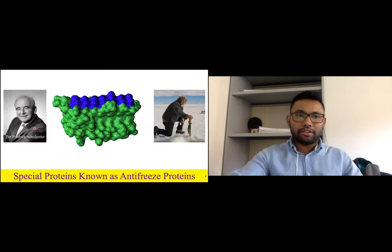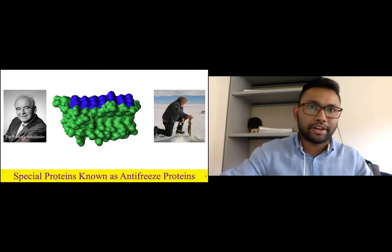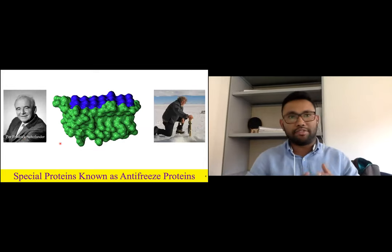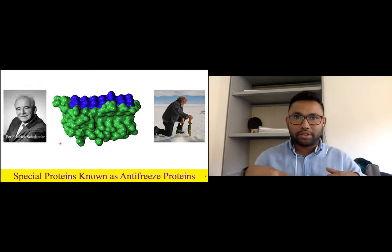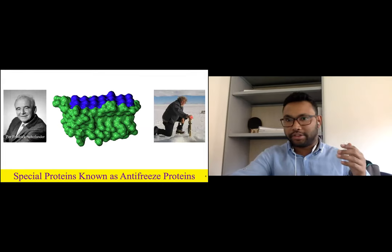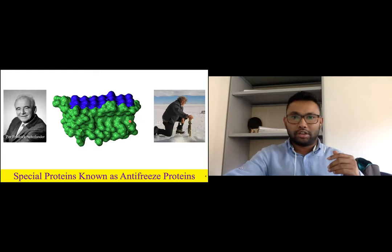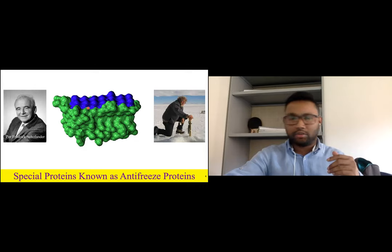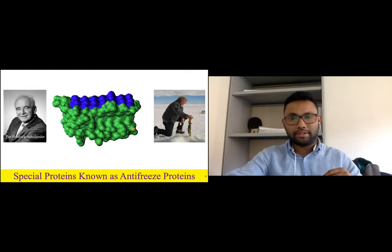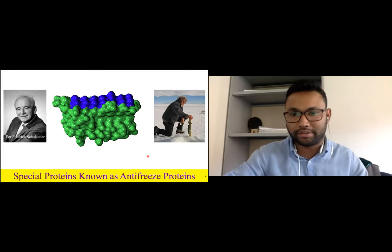In 1950, a Norwegian scientist set out to explain how Arctic fish can survive in water colder than the freezing point of blood. In the 1960s, another scientist isolated a protein known as antifreeze protein. I would like to bring your focus to two parts: the blue part is the ice binding site — I will refer to it as IBS — and the rest as NIBS throughout my slides.